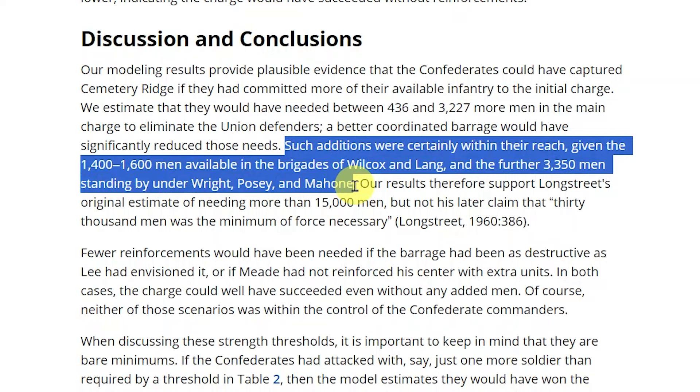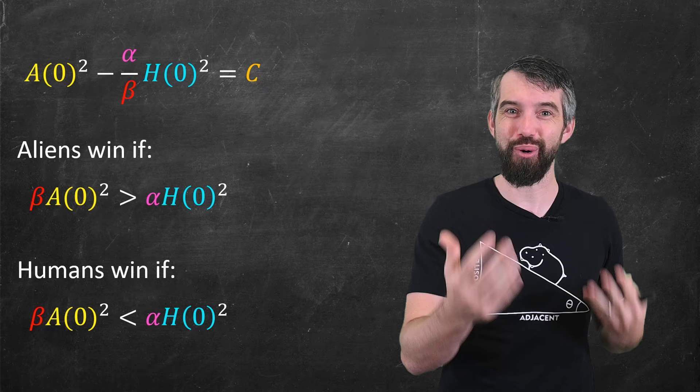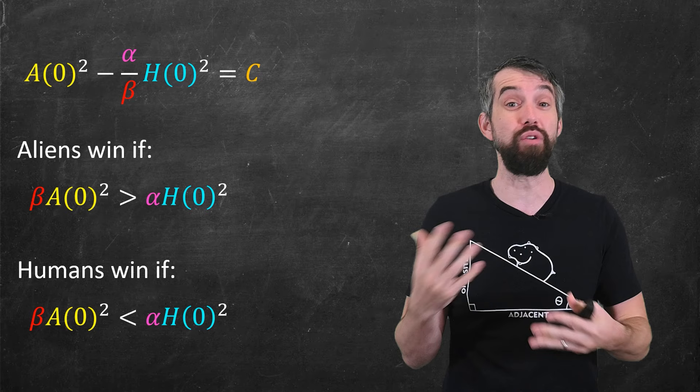At least that's according to this model and this estimate of the parameters. That's not meant to reflect some sort of historical fact or certainty. And disclaimer, I'm just a Canadian mathematician. What do I know? But it's interesting how the model can be used to look back in history and wonder about these kind of counterfactuals.